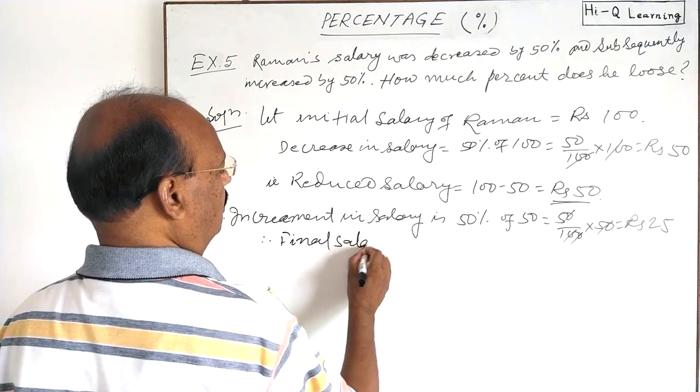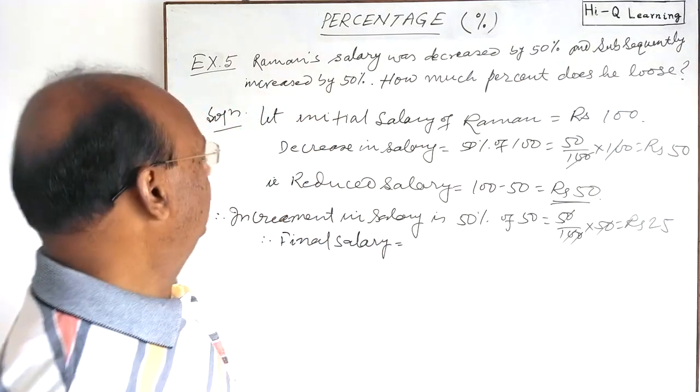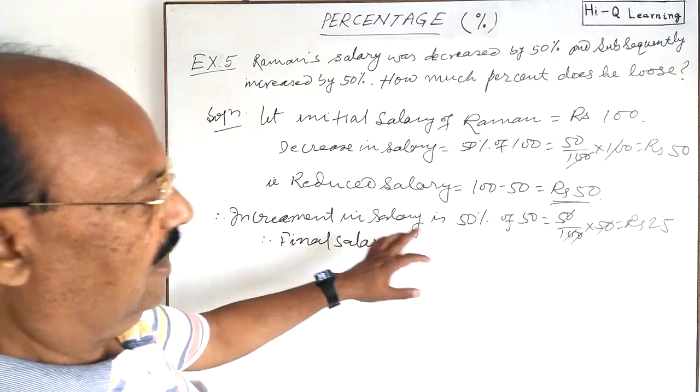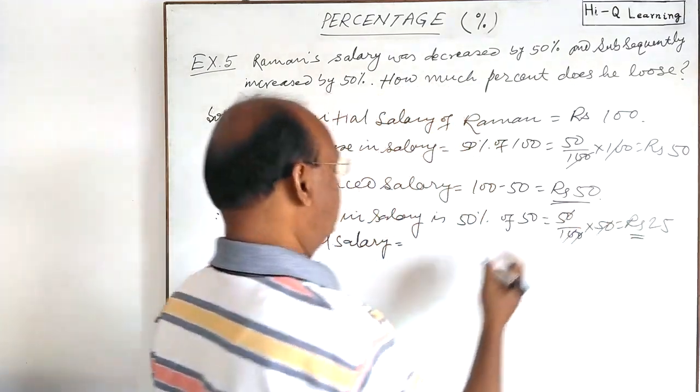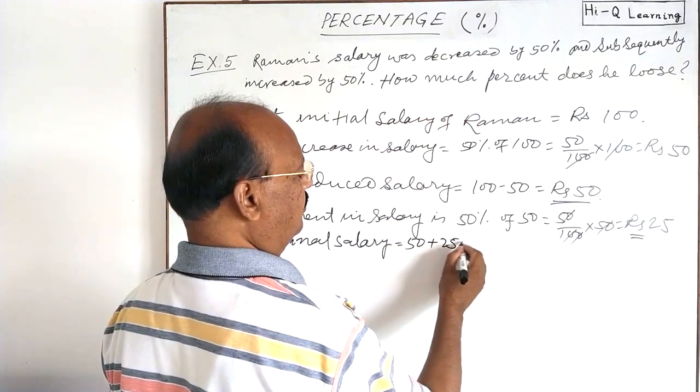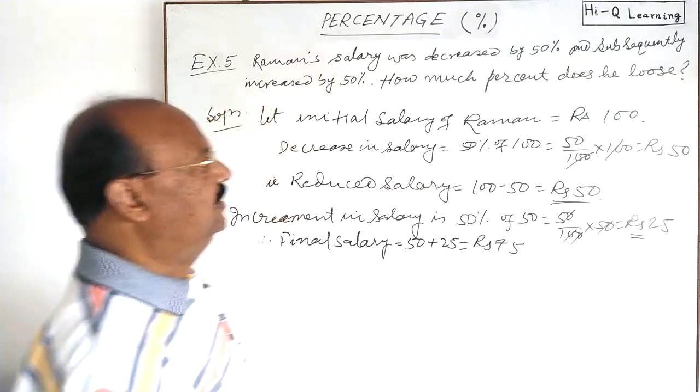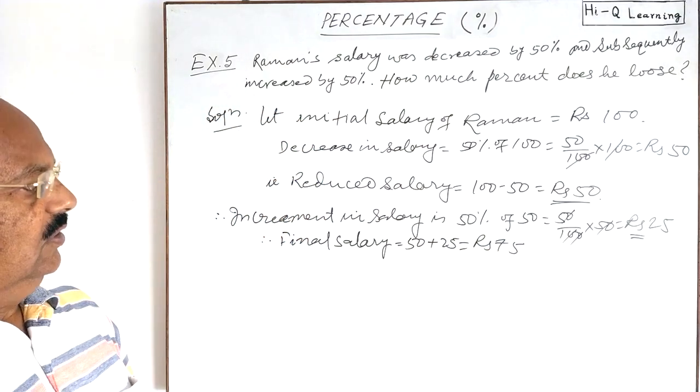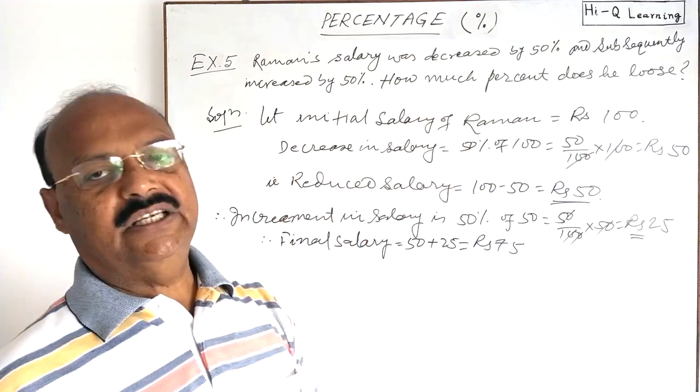This is increment in salary, rupees 25. So final salary will be how much? Therefore, final salary of Raman, we have to add this much amount 25 in reduced salary, so this is 50 plus 25. This is equal to rupees 75.